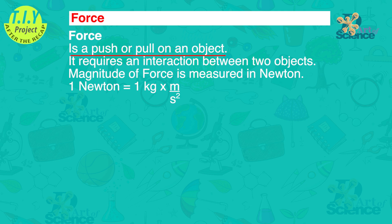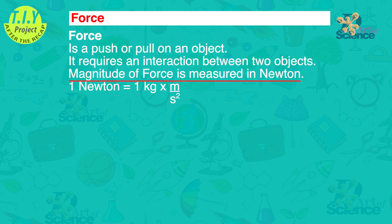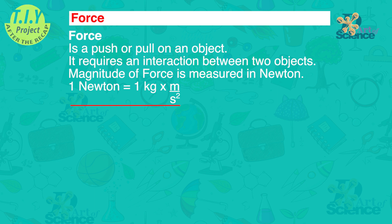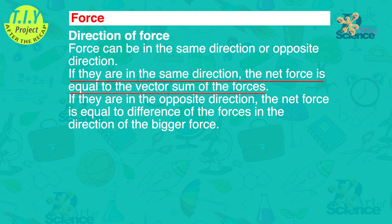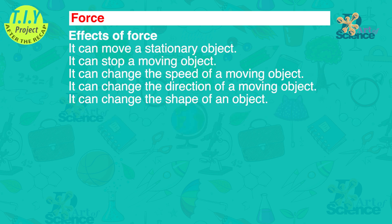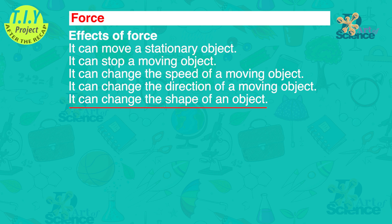With this we have covered the topic of force — let's recap. Force is a push or pull on an object, and requires interaction between two objects. The SI unit to measure the magnitude of force is the Newton, written as capital N. One Newton is the amount of force required to give a 1 kg mass an acceleration of 1 meter per second squared. Forces can be in the same direction or opposite direction. If in the same direction, the net force equals the vector sum. If in opposite directions, the net force equals the difference in the direction of the bigger force. The effects of force: force can move a stationary object, stop a moving object, change the speed, change the direction, and change the shape of an object.